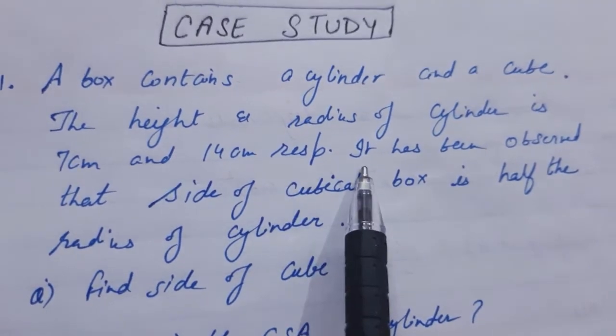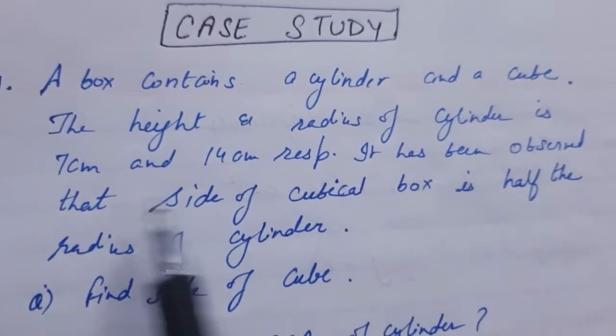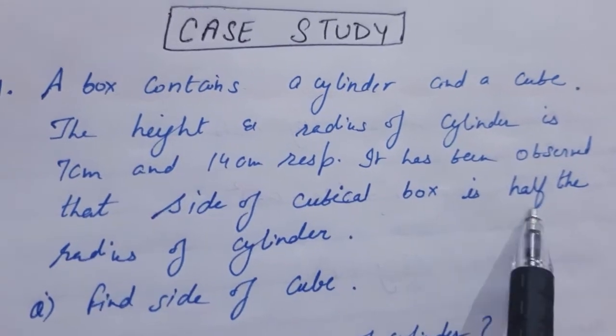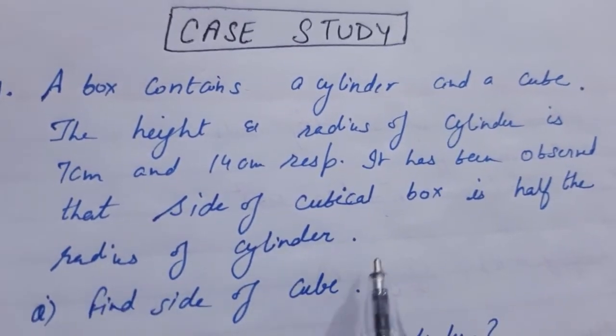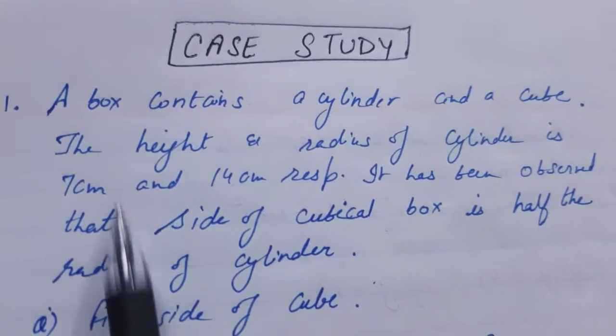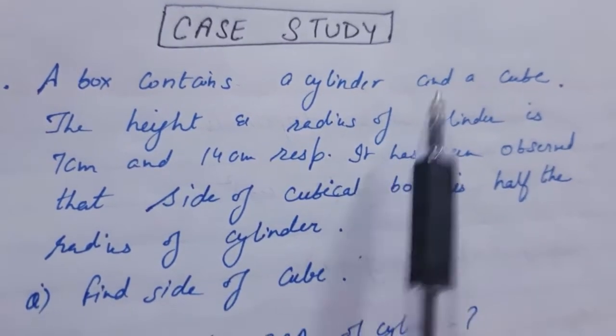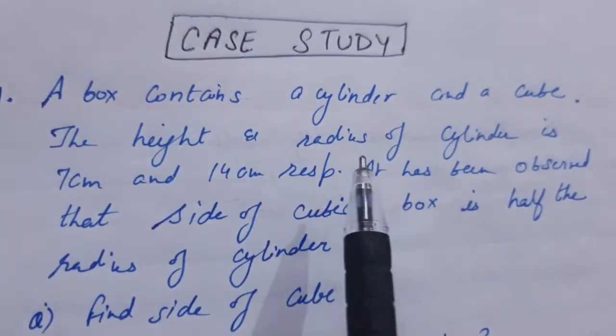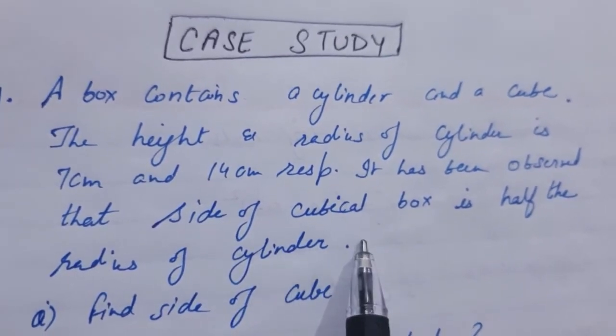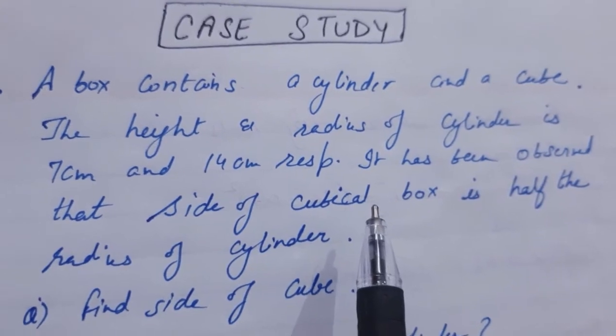It has been observed that the side of the cubical box is half the radius of the cylinder. This type of story will be given to you in a case study. You have to read it carefully, and afterwards you will be given 4 to 5 questions to answer.